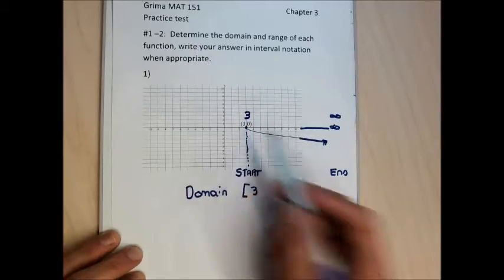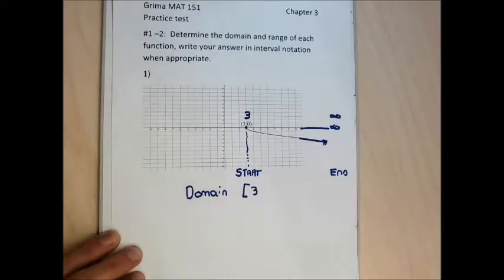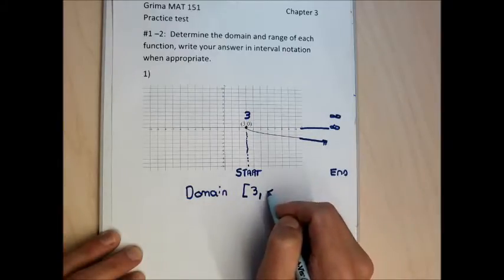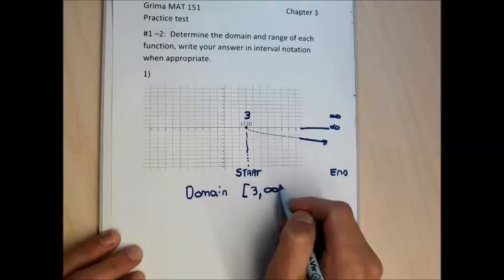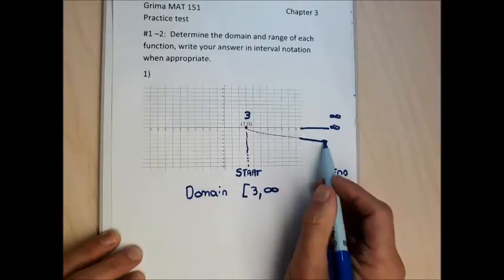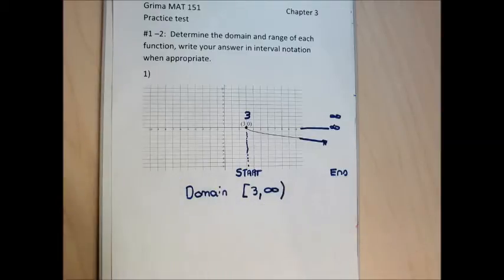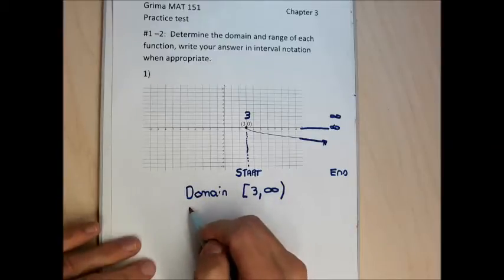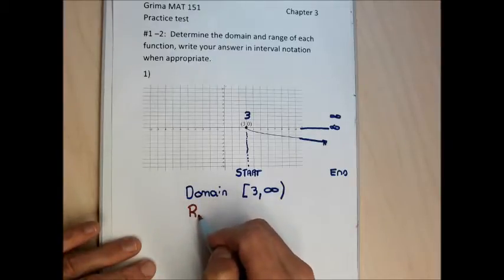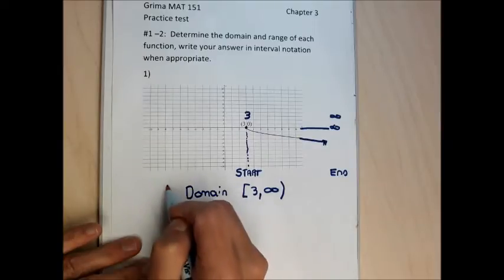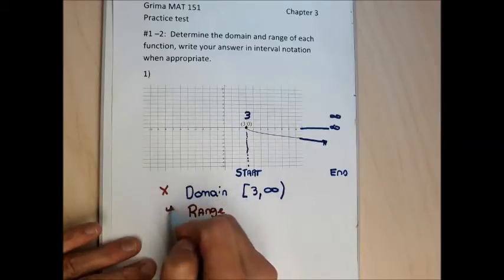The starting point is (3, 0), so its x-coordinate is 3. Because that's a point marked with a solid circle, it gets a square bracket. If it were marked with an open circle, it would get a round bracket. The right edge of the graph has an x-coordinate of infinity. Infinities always get round brackets because technically infinity doesn't exist — there's always a number bigger than any number you can think of.